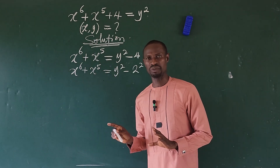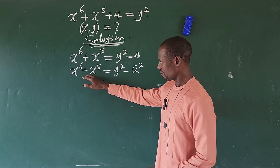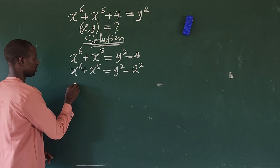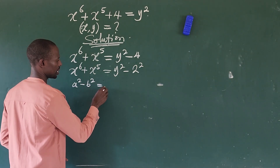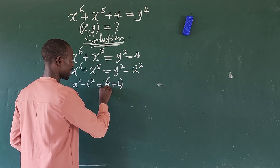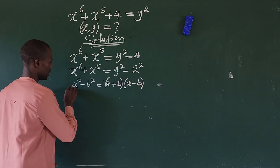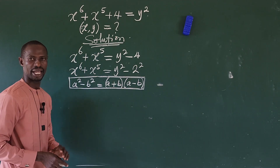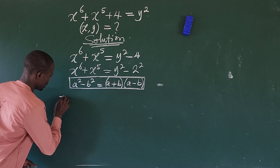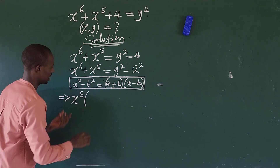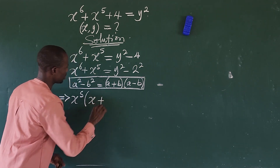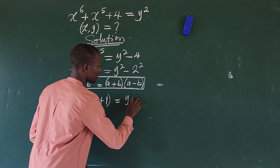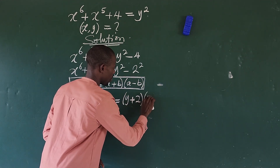We do this because we want to make use of the difference of two squares. We can factor out x to the power of 5 on the left-hand side and apply the difference of two squares on the right. The difference of two squares states that a² minus b² equals (a + b)(a − b). So this implies x to the power of 5 times (x + 1) equals (y + 2)(y − 2).